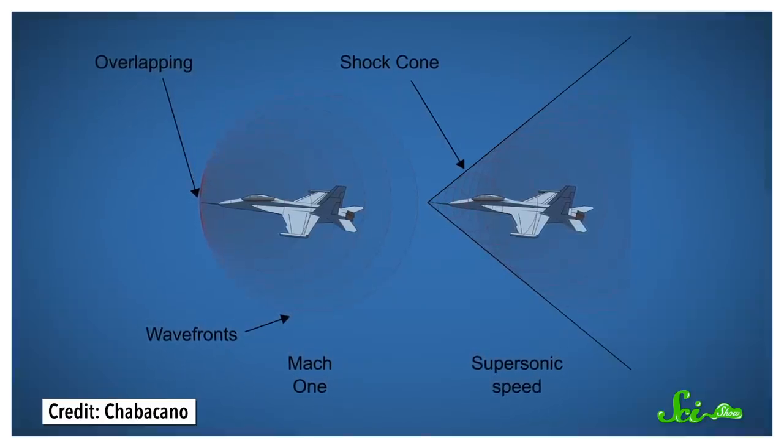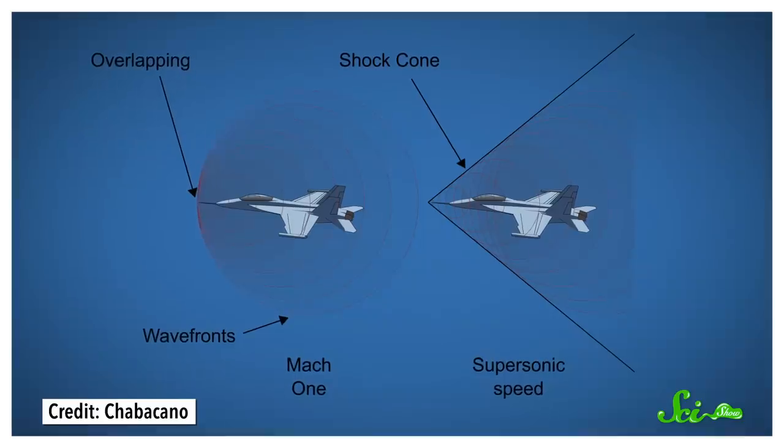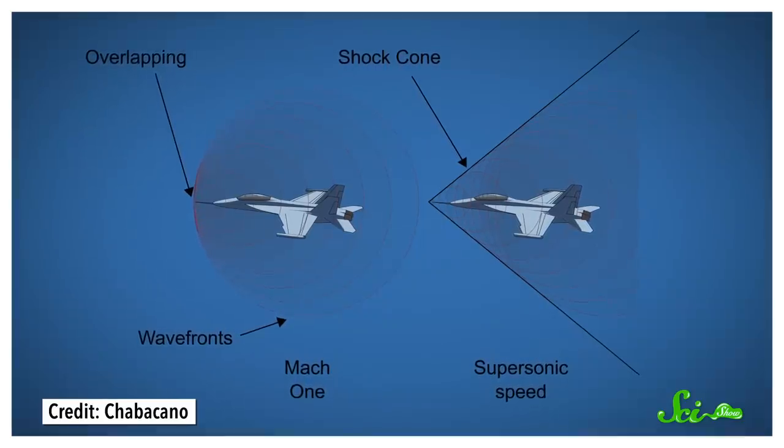It blocks other air from smoothly moving past the plane, decreases lift, and increases drag forces that slow the aircraft down. Which explained why wings and propellers become less effective at those high speeds.